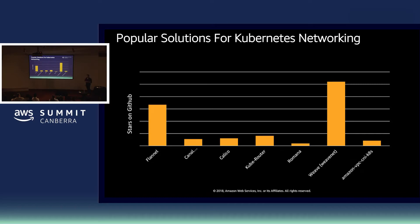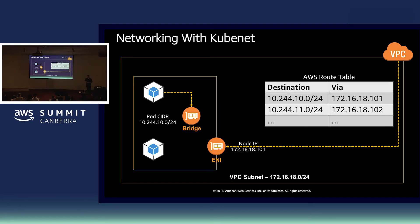Here are some examples of CNI plugins. What would make you choose one over another? Some reasons: the capabilities they offer. Some require you to deploy an overlay network. Some require access to a persistent data store at the back end. Some provide a mechanism to micro-segment your containers using network policies. So think about what you're trying to achieve and what your requirements are from a deployment, compliance, and security perspective, and choose a CNI plugin that meets those requirements.